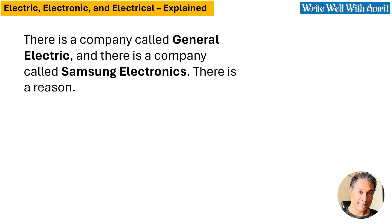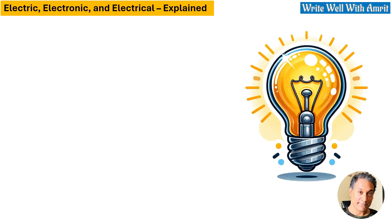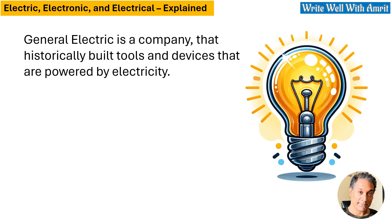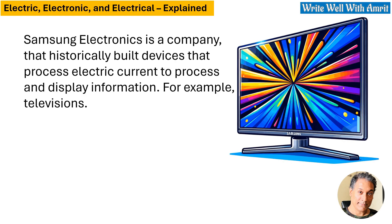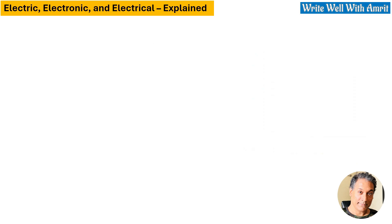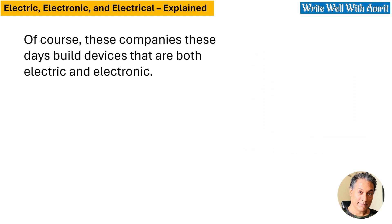There is a company called General Electric and there is a company called Samsung Electronics — there is a reason for this difference. General Electric historically built tools and devices powered by electricity, whereas Samsung Electronics focuses on electronic devices such as televisions. These days, both companies build devices that are both electric and electronic.